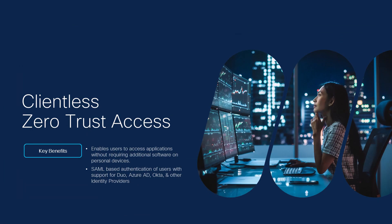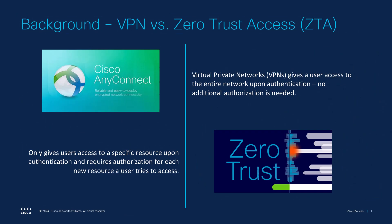Reaching number four in our list, we have clientless zero trust access. To understand the importance of this, let's give a little background on ZTA and VPNs, which enable users to access internal or private resources and applications on premises or remotely. The clear differentiator between VPN and ZTA is that ZTA only gives users access to a specific resource upon authentication and requires authorization for each new resource a user tries to access, whereas a VPN gives a user access to the entire network upon one authentication.